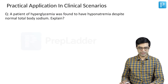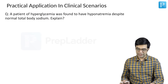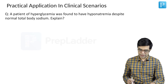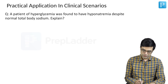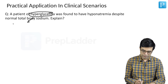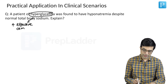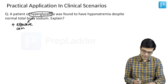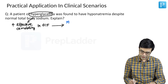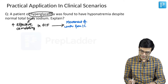Let us take a clinical case. A patient with hyperglycemia was found to have hyponatremia despite normal total body sodium — explain how this can happen. It can be explained by the concept of effective osmolality. Whenever there is hyperglycemia, there will be an increase in the effective osmolality of the ECF. This will cause movement of water from the ICF to the ECF.